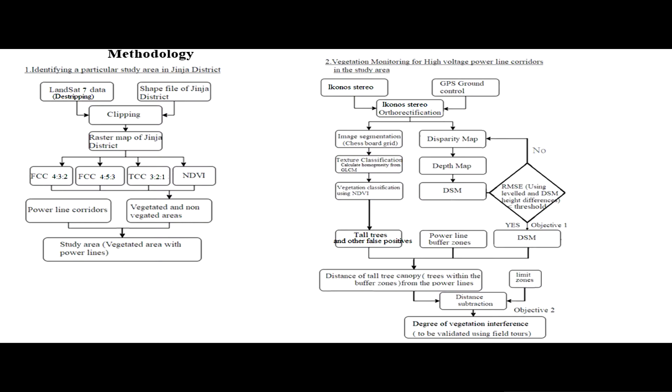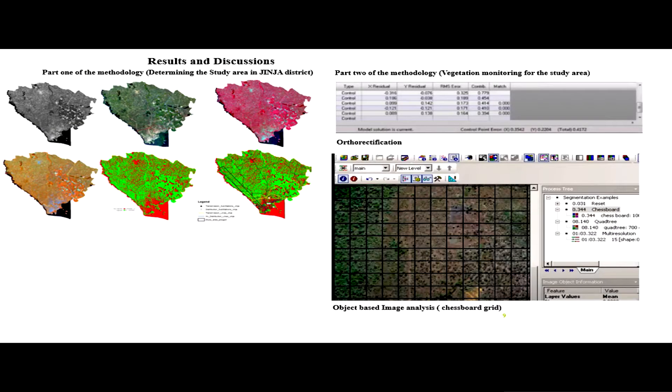In the first part of the methodology, I'm trying to identify tall trees and other false positives. In the second part, I'm trying to get the digital surface model. In the third part, I'm trying to determine the degree of vegetation encroachment.